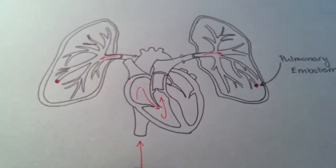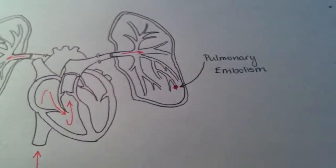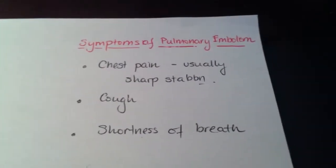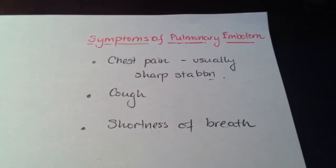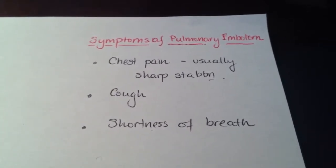Because the clot cannot get back into the heart to go to the brain, you get a pulmonary embolism. Signs and symptoms of pulmonary embolism are chest pain, usually sharp stabbing pain, cough, and shortness of breath.